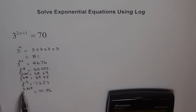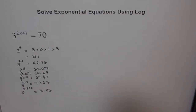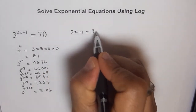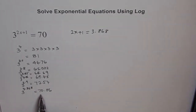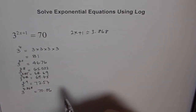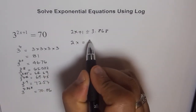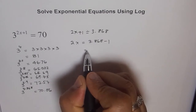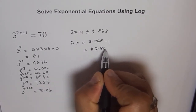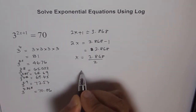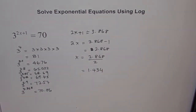We have 2x plus 1 is equal to 3.868, because this is closest to 70 we got. We know it's very close. So now we can easily solve it: 2x equals 3.868 minus 1, which is 2.868. Then x equals 2.868 divided by 2, and we get approximately 1.434.